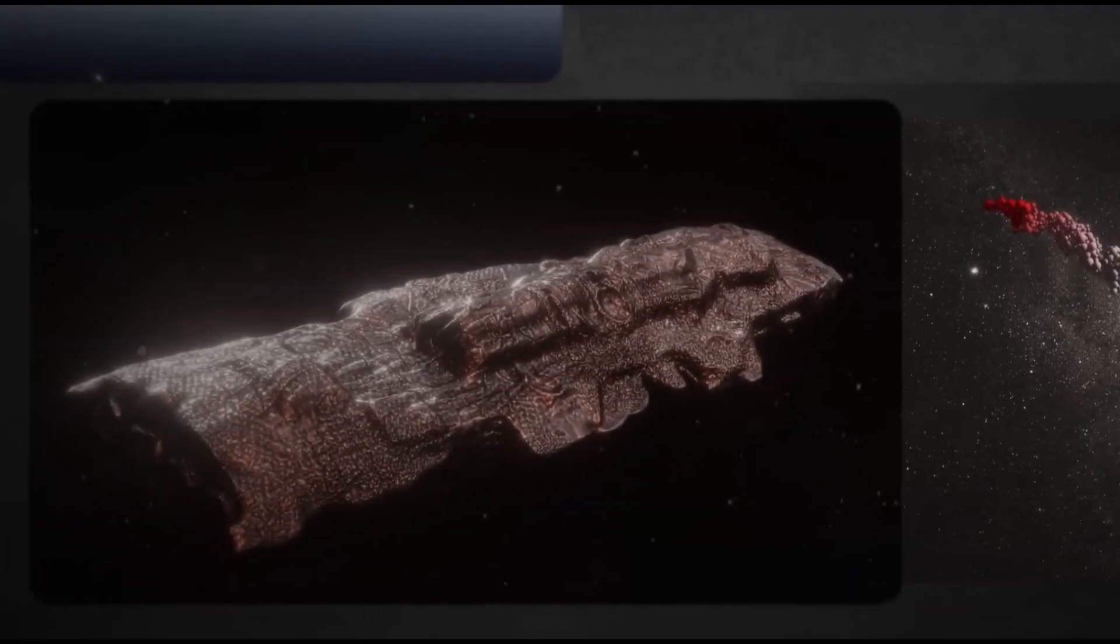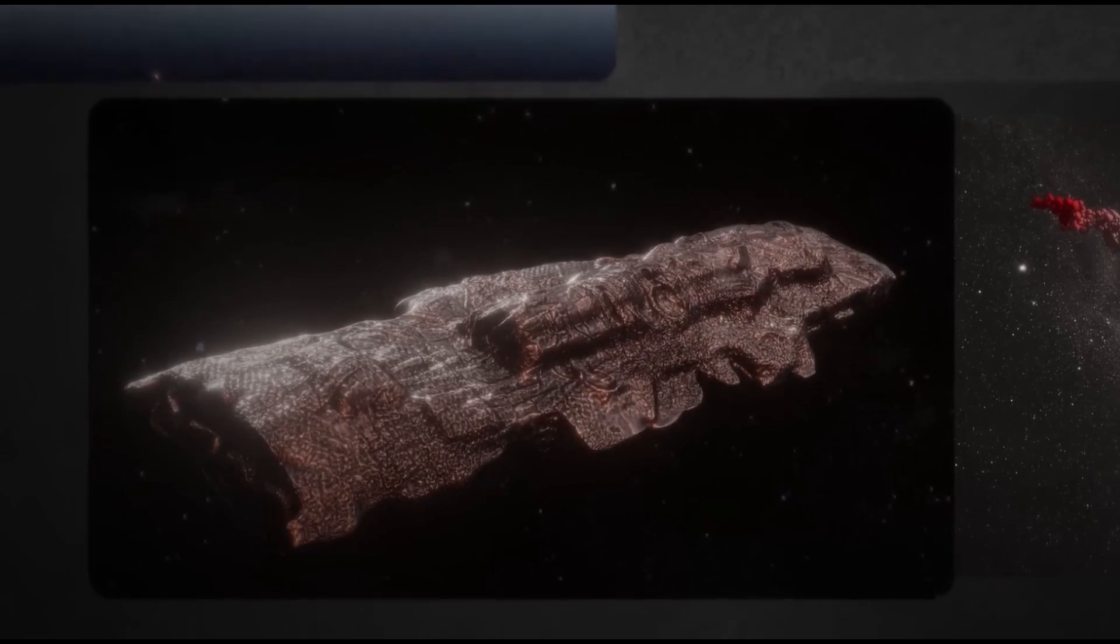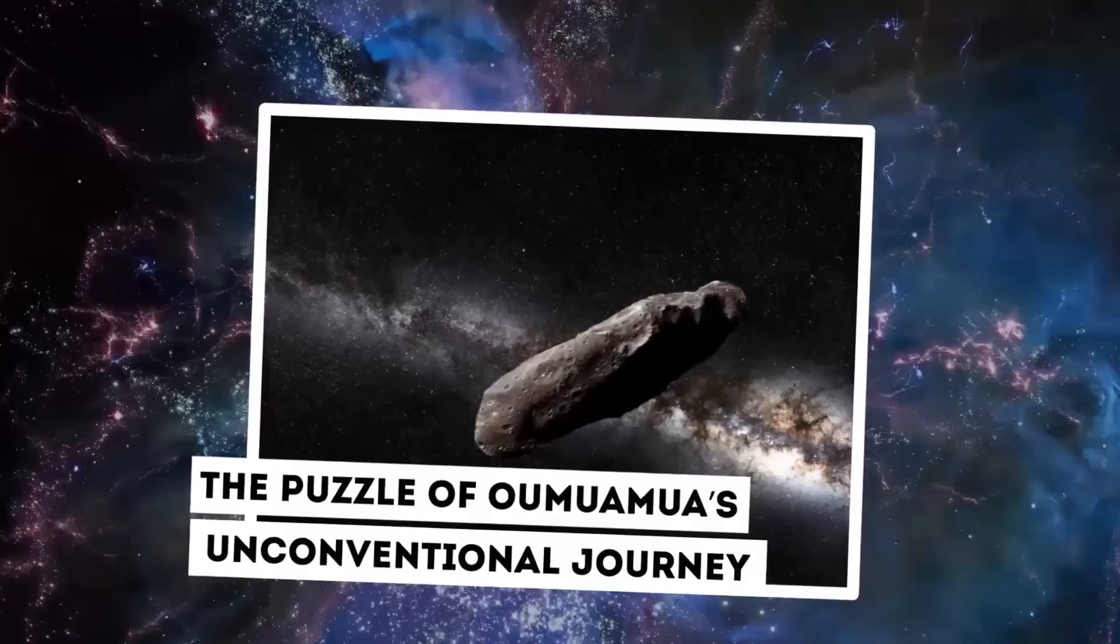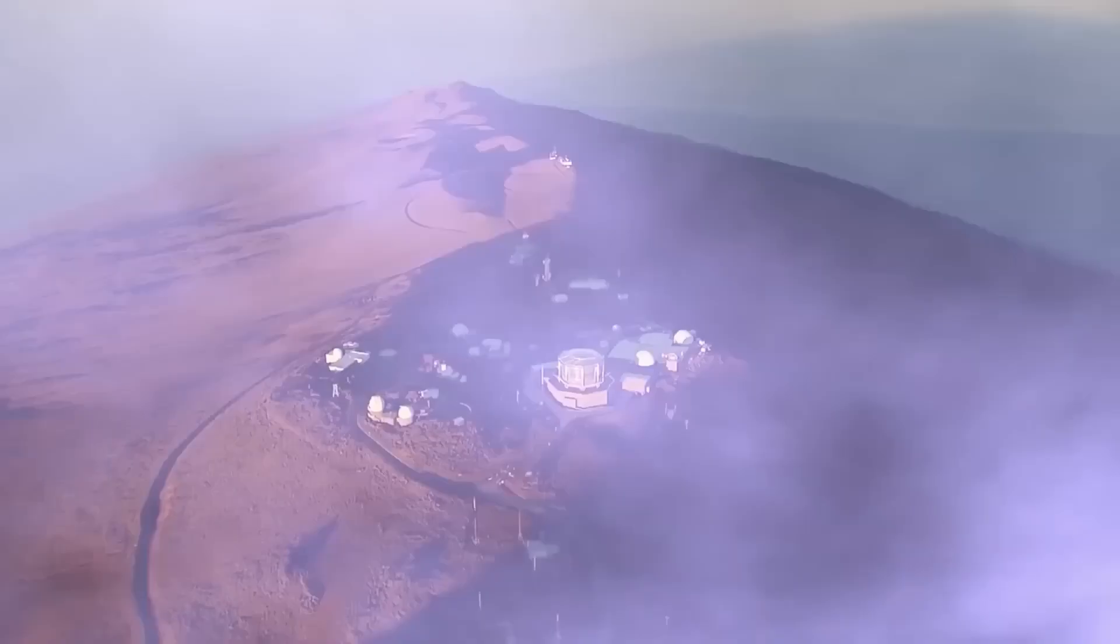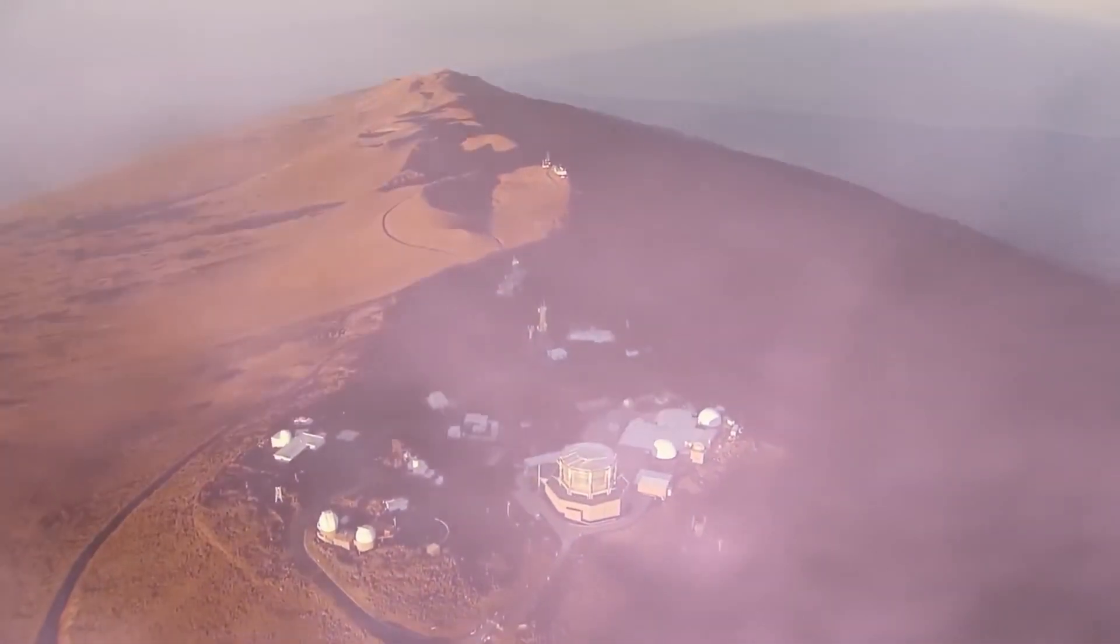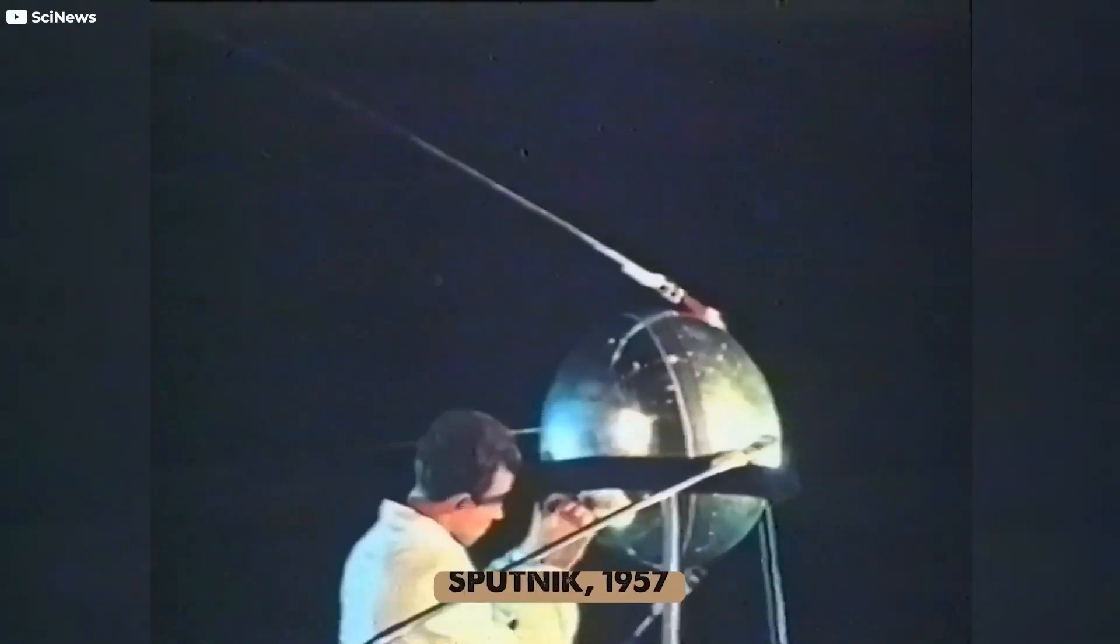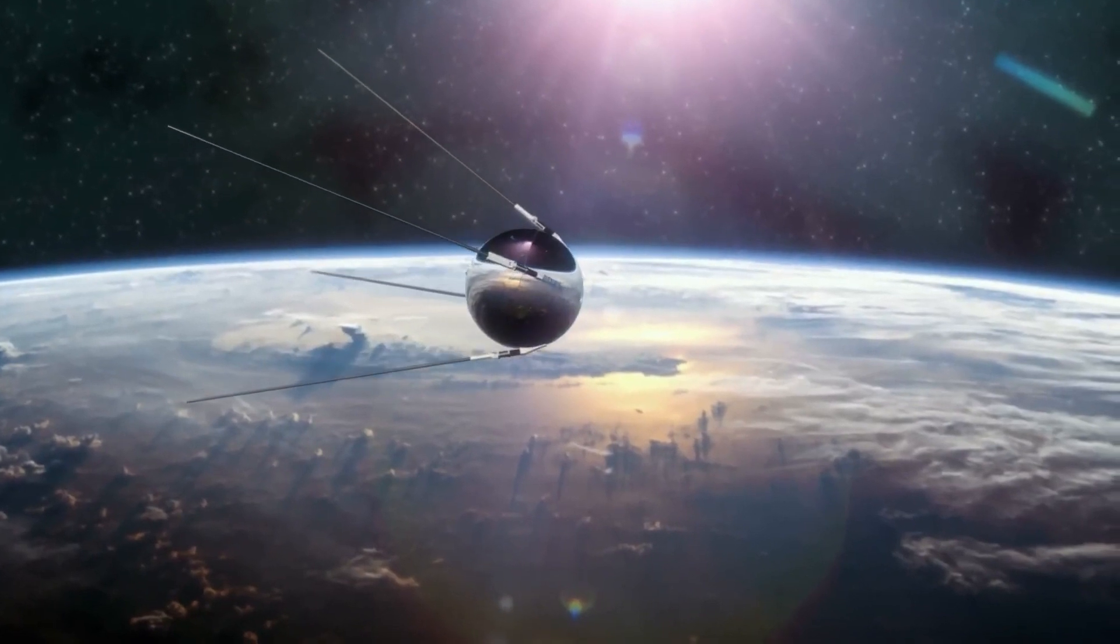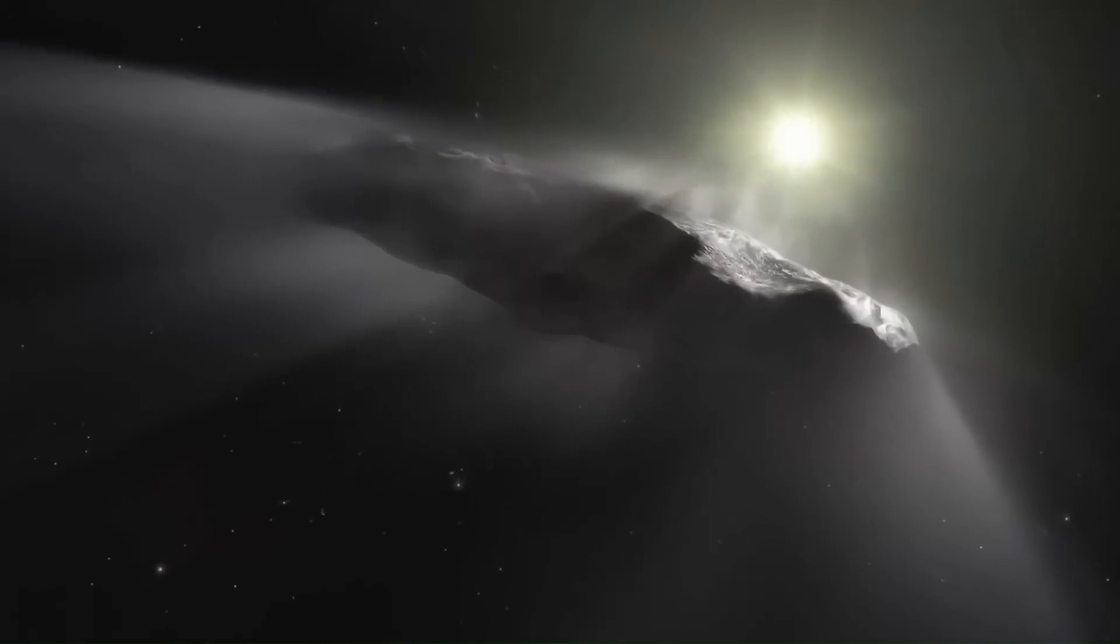Even well-known figures like Joe Rogan found themselves captivated by the mysteries surrounding this cosmic visitor. He asked Avi Loeb, a smart physicist and writer from Israel and America, to talk about Oumuamua on his podcast. Avi Loeb did a great job explaining what Oumuamua might be and whether it could be from outer space. It was tough to learn more about Oumuamua because it left our solar system quickly. But now, surprisingly, Oumuamua is back and sending signals to Earth.